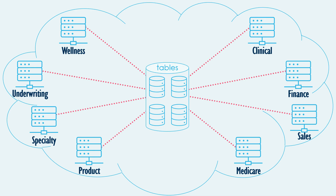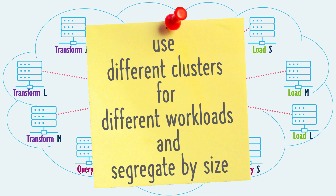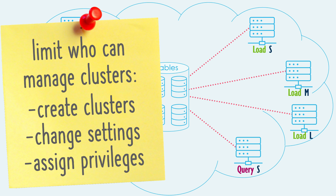With Snowflake, you can have multiple clusters access the same data, which helps to prevent resource contention. Companies often assign clusters based on internal departments because this makes it easy to allocate costs. However, this can lead to running several unbusy clusters for teams that don't run many queries. A better approach is to assign clusters based on workload type and size — for example, separate clusters for loading data, transforming it, and querying it. Busy clusters are more cost effective, so centralizing cluster management is important: put guardrails around who can create clusters, modify their settings like the auto-suspend timeout, and who can grant access to them.